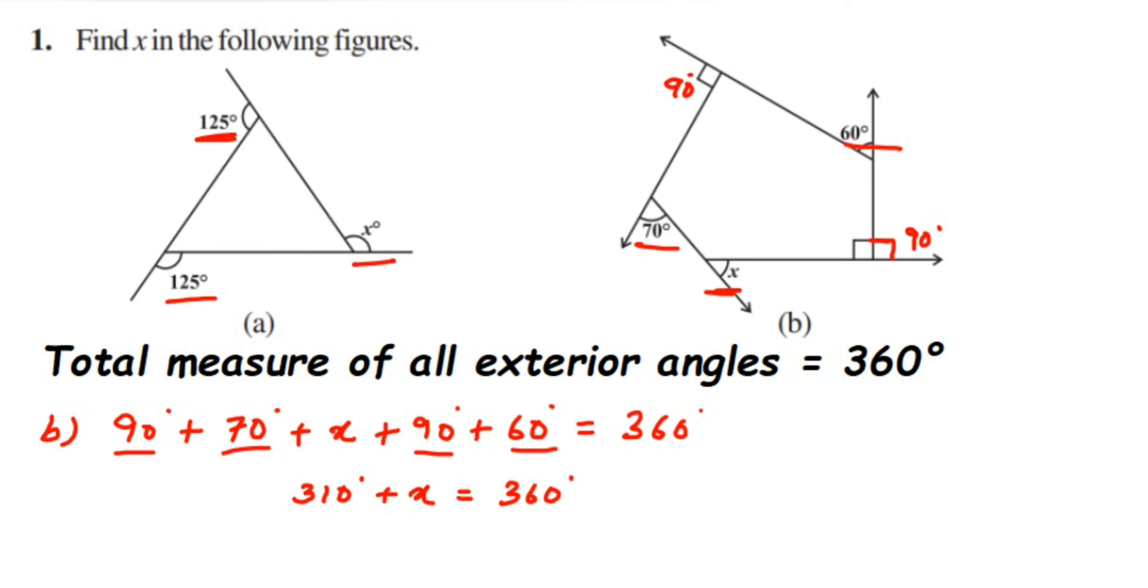Now transpose the 310 to the other side of the equation, the sign will change. So x is equal to 360 degrees minus 310 degrees which is 50 degrees. So therefore the x value is equal to 50 degrees.